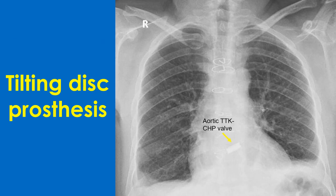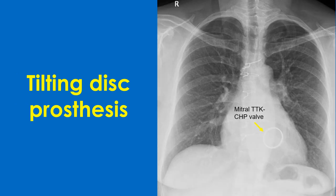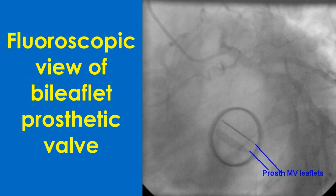The initial Bjerk-Shiley valve, which has been discontinued, was a tilting disc valve. Currently there are single-leaflet and bi-leaflet tilting disc valves. The TTK Chitra valve is a tilting disc valve with an ultra-high molecular weight polyethylene disc which is not radiopaque, so only the valve sewing ring is visible. X-rays show the TTK Chitra valve in both aortic and mitral positions.